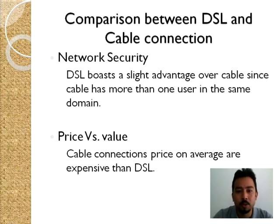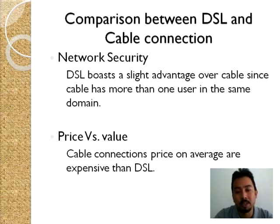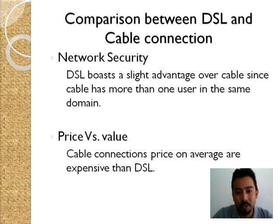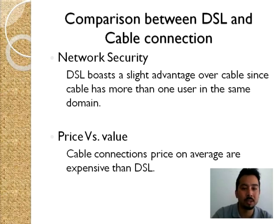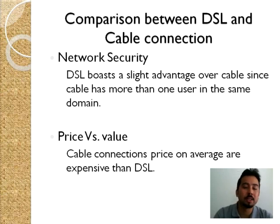When it comes to network security, DSL has a slight advantage over cable. Since cable is more like a local area network with more users connected in the same domain, there is a greater chance of security threats on cable than on DSL. Comparing price versus value, cable connections are on average a little more expensive than DSL. Although higher versions of ADSL are equally expensive, the general standard ADSL packages are comparatively cheaper than cable connections.